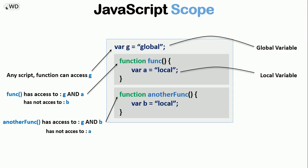Now the function 'fang' has no access to the b variable, and 'anotherFang' has no access to the a variable. Another thing I want to talk about is the life of variables. For global variables, the variable is created when the window is opened and deleted when the window is closed. For the local variable, it has a short life — it is created when we call the function and deleted when the function finishes executing.